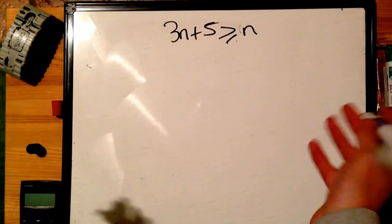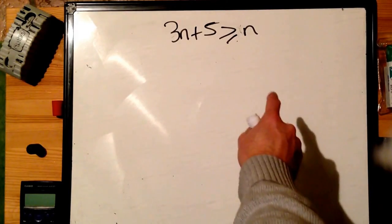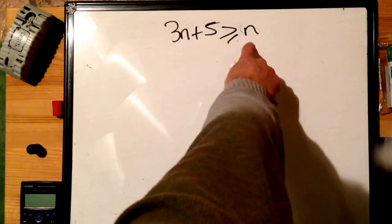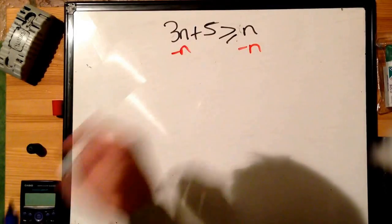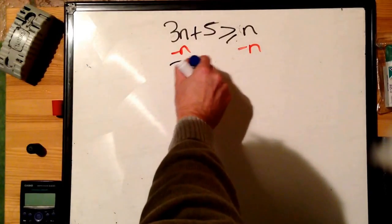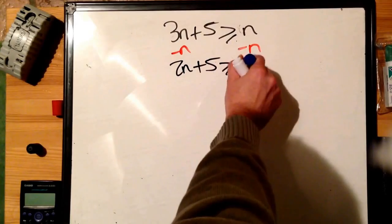Now, we treat it as if it were an equation. Find the smallest number of unknowns on both sides. We've got three n's here, one n here, that's the smallest, so we'll remove that from both sides, leaving us with 2n plus 5 is bigger than or equal to 0.